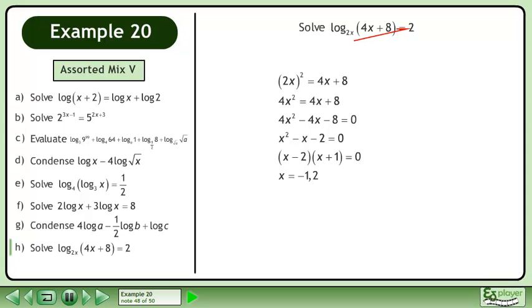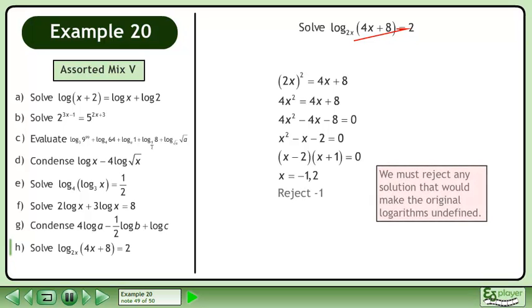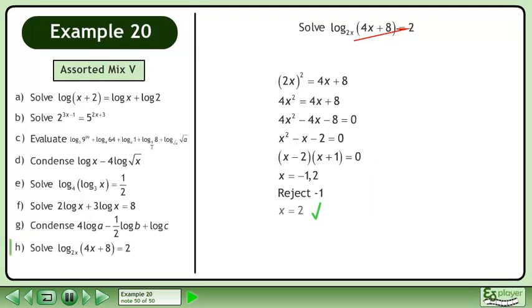The solutions are x = -1 and 2. Reject -1. We must reject any solution that would make the original logarithms undefined. The answer is x = 2.